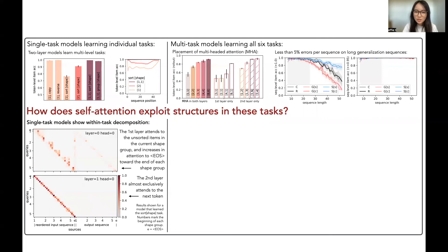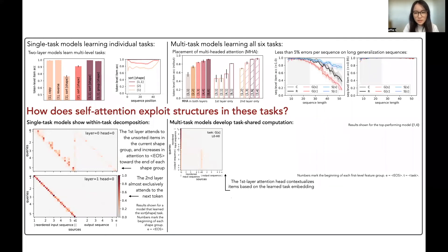Here, I'm going to highlight three results. First of all, we see that the first layer's attention head contextualizes the items based on the task embedding.